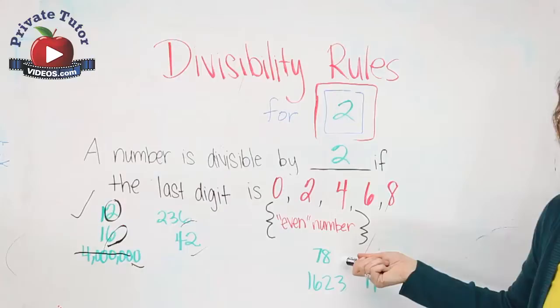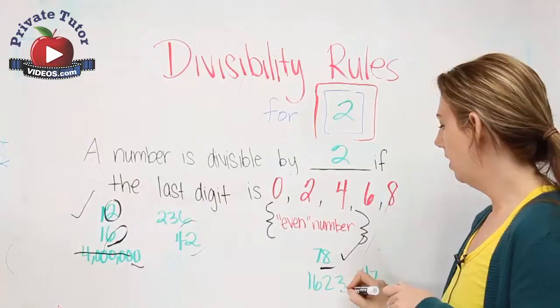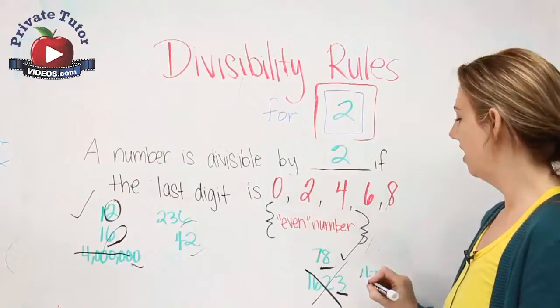Let's do a mini quiz to check for understanding. 78 ends with 8. There it is. Definitely. Ends with a 3. That's not an even number. 47. That's a 7. Not an even number.